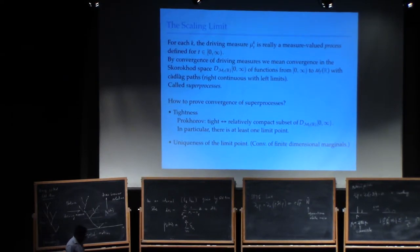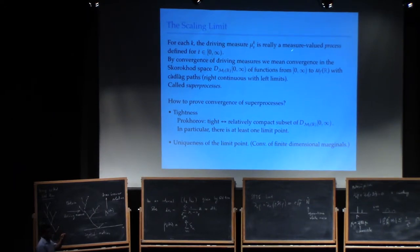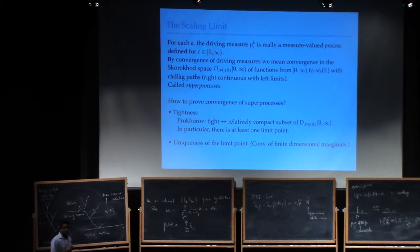To prove a scaling limit, you need to establish tightness and then uniqueness of the limit point. What you've really got is a sequence of measure-valued processes, and you want to show that sequence is tight in the Skorokhod space of paths into the space of measures. The limit you would get is something called a super process — a measure-valued Markov process.